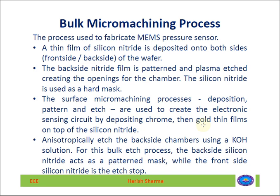The backside nitride film is patterned and plasma etched to create the opening for the chambers. This silicon nitride is used as a hard mask. Earlier, during the lithographic process we were using photoresist for this purpose; here we are using the nitride film as a hard mask.